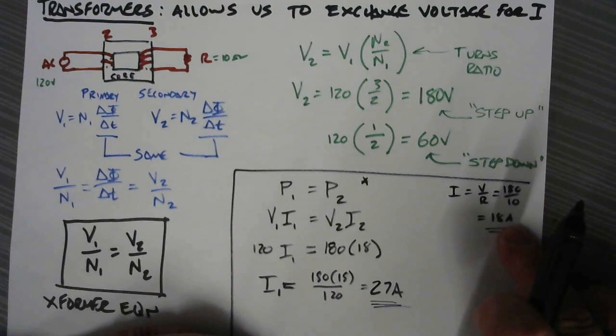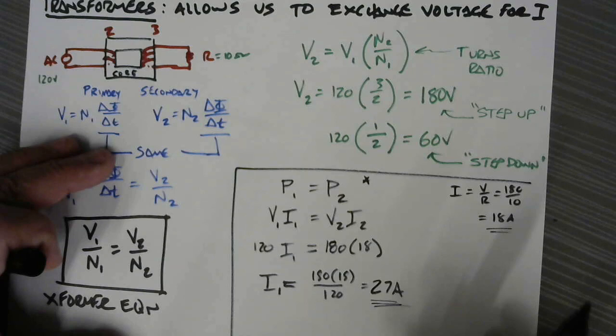We're going to have to provide 27 amps on the primary side in order to get 18 amps on the secondary side. So the current is decreasing, the voltage is increasing, overall the power stays the same.